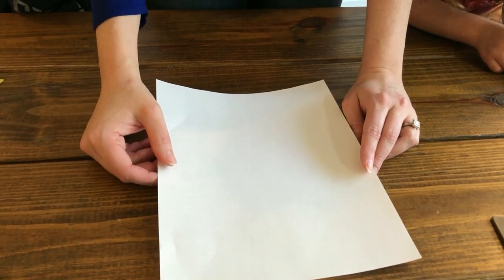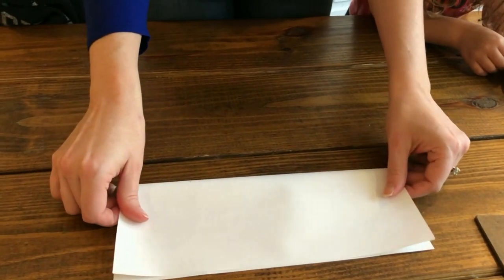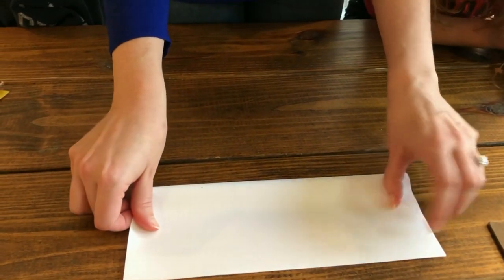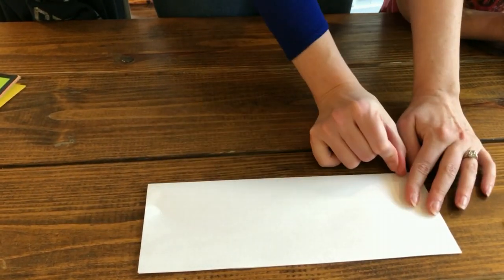Alright, today we're going to make a basic paper airplane like I did when I was a kid. So what we do is we fold it hot dog style, so lengthways, and we want to make nice crisp lines.